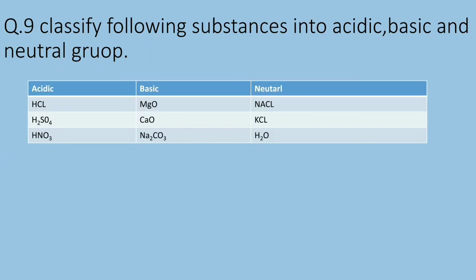Question nine: classify the following substances into acidic, basic, and neutral groups. Acidic substances: HCl, H2SO4, HNO3. Basic substances: MgO, CaO, Na2CO3. Neutral substances: NaCl, KCl, and H2O.